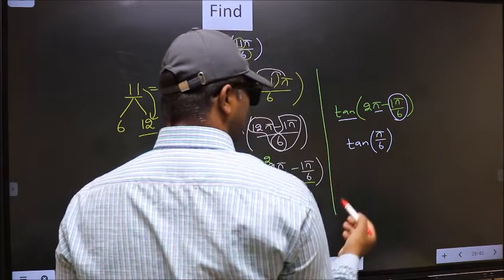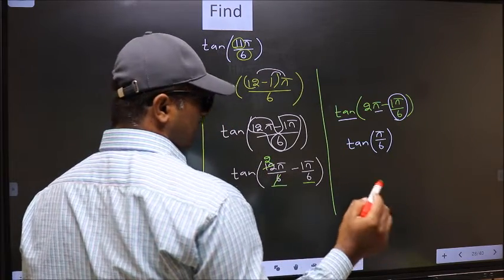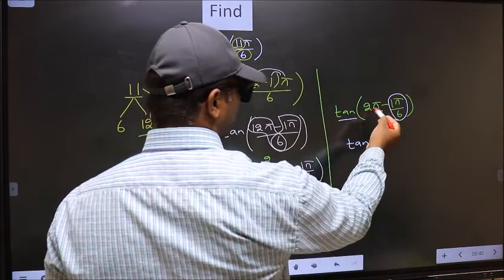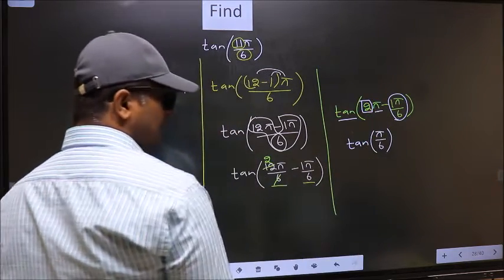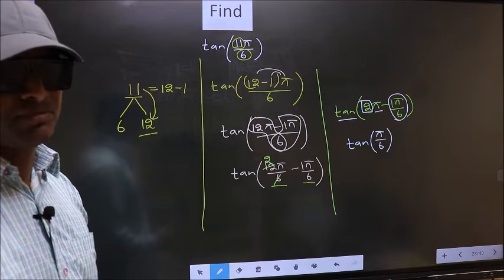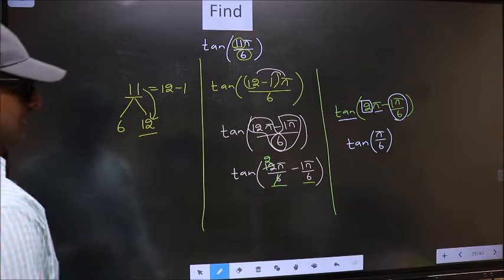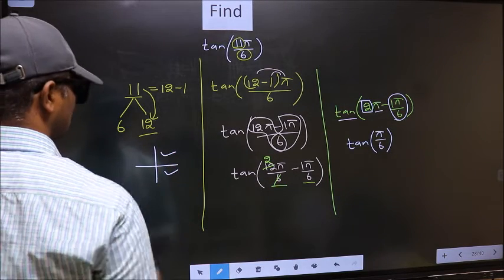Now, the question is will we get plus or minus? To answer that, you should look at the number before π, which is 2. And 2 is even, and all even multiples of π lie in either the first or the fourth quadrant.